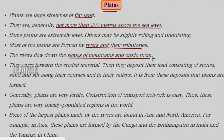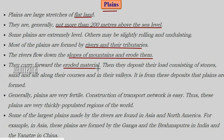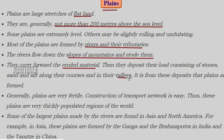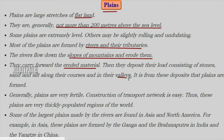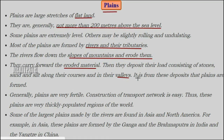Plains are formed by rivers and their tributaries. When rivers flow over mountains and rocks, the continuous flow of water erodes the upper surfaces of rocks and mountains. As a result of this erosion, plains are formed. The rivers carry forward the eroded material — consisting of stones, sand and silt — and deposit it in valleys downstream.